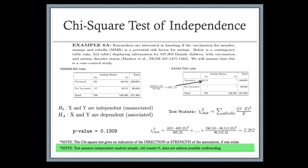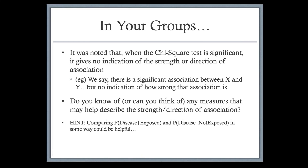The chi-squared test of independence also assumes the data came from a random sample, that expected cell counts are at least five, and that there is at least one person in each cell of the table. An important limitation: since this is simple two-by-two table analysis, it does not allow us to address confounding in any way.